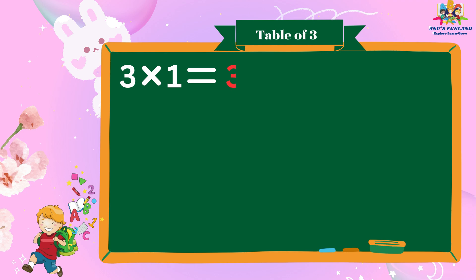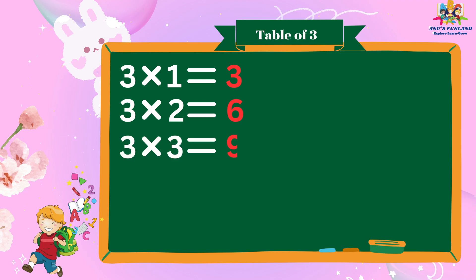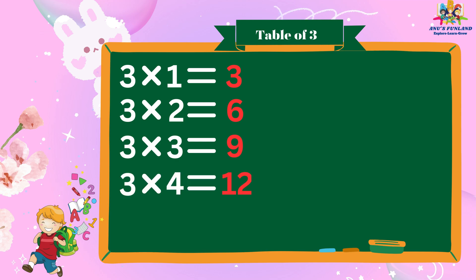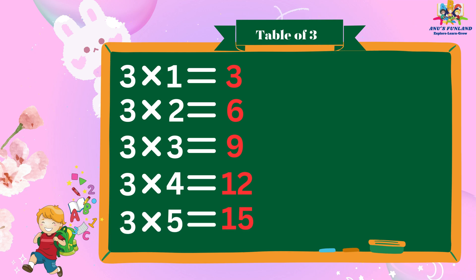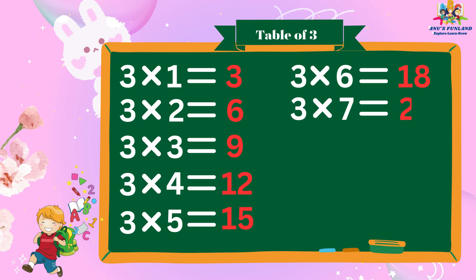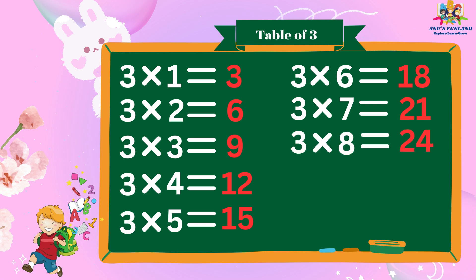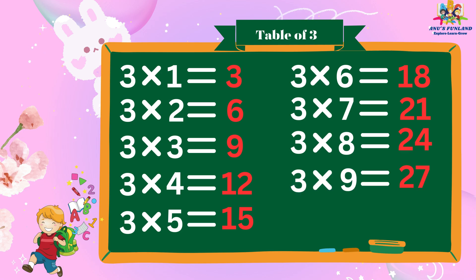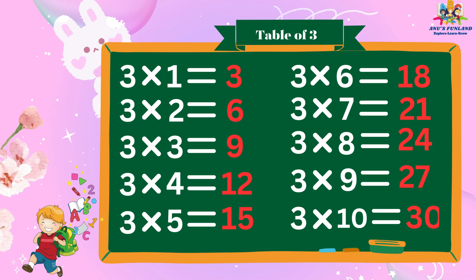3 1's are 3, 3 2's are 6, 3 3's are 9, 3 4's are 12, 3 5's are 15, 3 6's are 18, 3 7's are 21, 3 8's are 24, 3 9's are 27, 3 10's are 30.